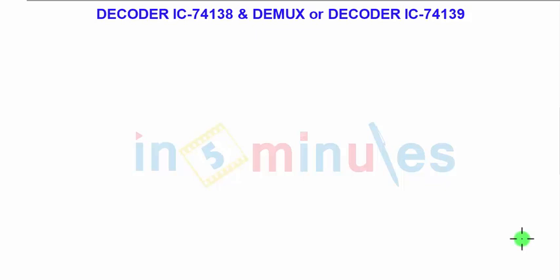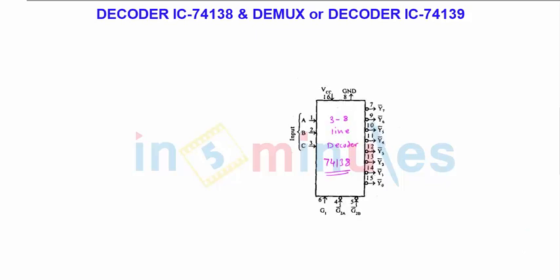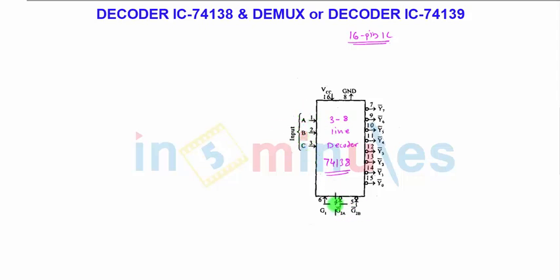Let us start with decoder IC 74138. It is a 16-pin IC. The first three pins — 1, 2, and 3 — are selected as the input pins, or the select lines in the case of a demux, now treated as input lines. These are labeled A, B, and C. Pins 4, 5, and 6 are the enable pins, forming the enable section. There are three enable inputs: G2A-bar and G2B-bar.